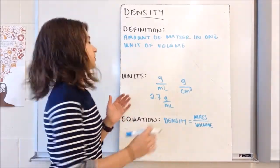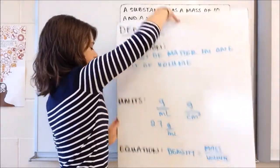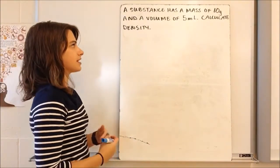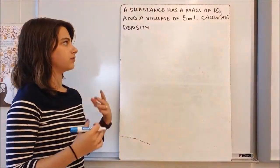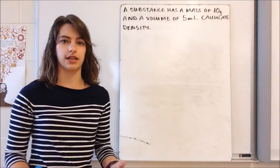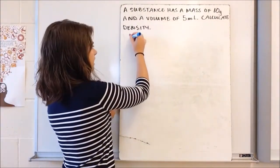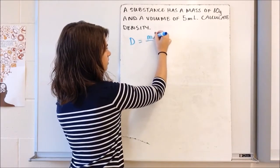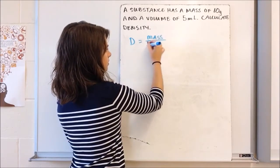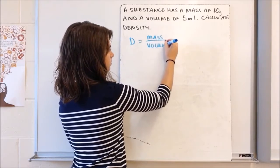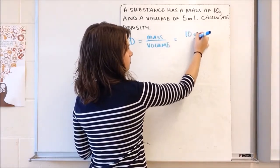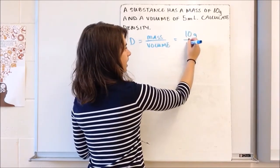Let's look at an example. The first example reads: a substance has a mass of 10 grams and a volume of 5 milliliters. Calculate the density. We know that density equals mass divided by volume. My mass is 10 grams, my volume is 5 milliliters.